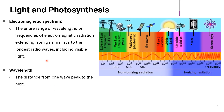Most life on this planet depends on light either directly or indirectly, so it is important to understand the nature of light and its essential role in photosynthesis. Visible light represents a very small portion of a vast continuous range of radiation called the electromagnetic spectrum.